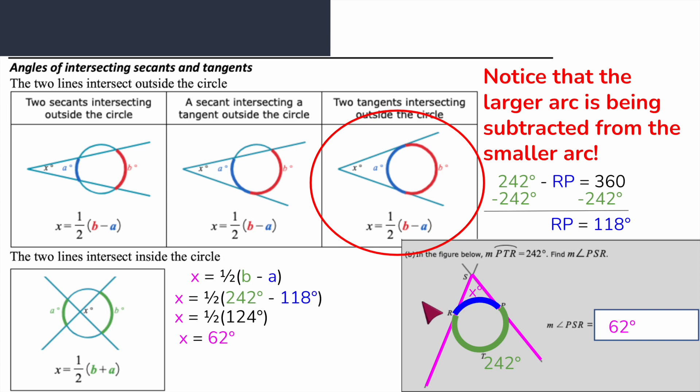That was using our secants and tangents that are intersecting inside and outside the circle to find either a missing arc or a missing angle. I hope that helped and I'll see you in the next video.